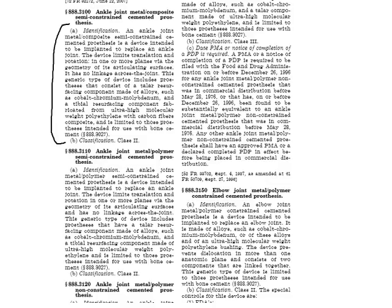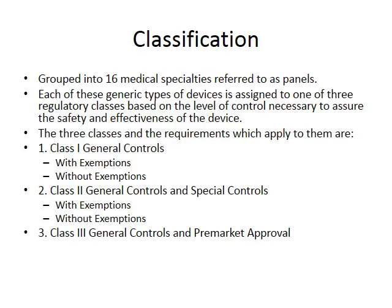Here's an example: an ankle joint metal composite semi-constrained cemented prosthesis. There's a description of the technical details, a citation number, and it's classified as Class 2. To market your device in the US, you go to the Code of Federal Regulations, find your device, and find its class. These 16 medical specialties are referred to as panels, and each generic device type is assigned to one of three regulatory classes based on the level of control necessary to assure safety and effectiveness.